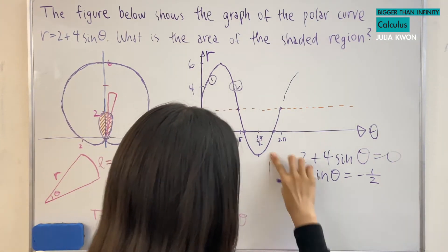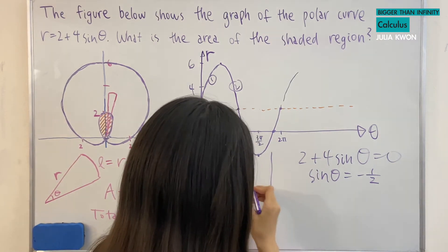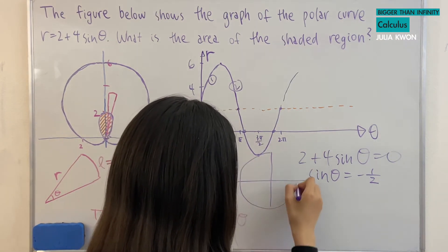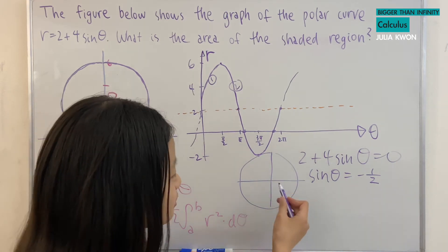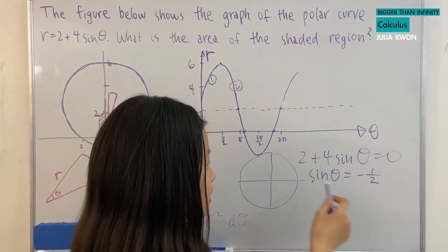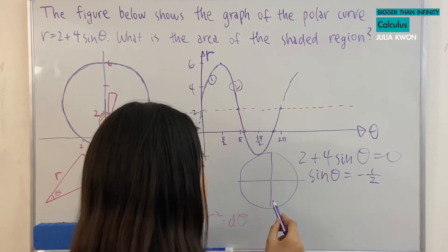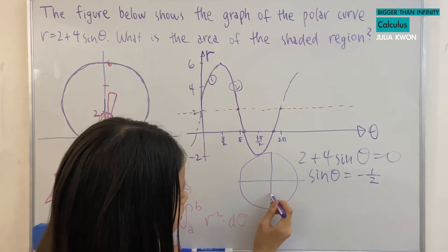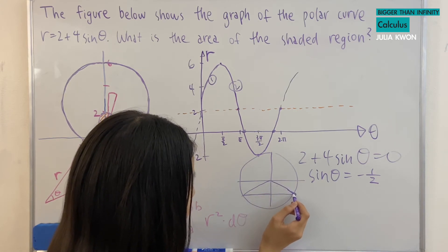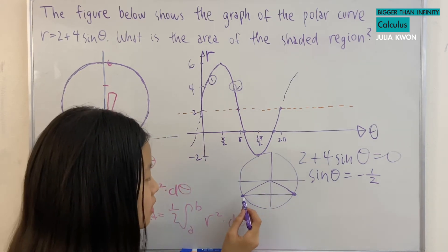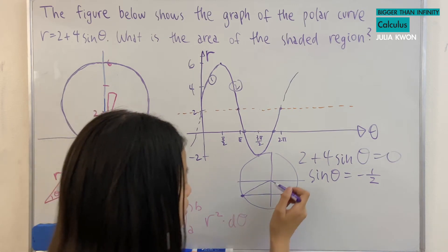And when is sine theta equal to negative one half? Well, let's draw the unit circle really quick. Okay, that is an awful circle, but we'll go with it. And this is the y-axis.